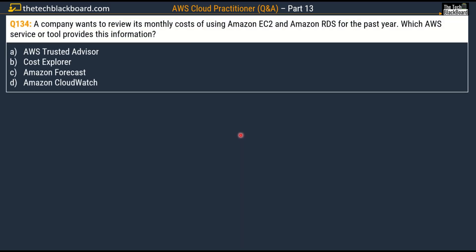Question number 134: a company wants to review its monthly costs for Amazon EC2 and Amazon RDS for the past year. Which AWS service or tool provides this information? Options are AWS Trusted Advisor, Option B: Cost Explorer, Option C: Amazon Forecast, and Option D: Amazon CloudWatch. The correct answer is Option B, Cost Explorer — a tool that enables you to view and analyze your costs and usage.